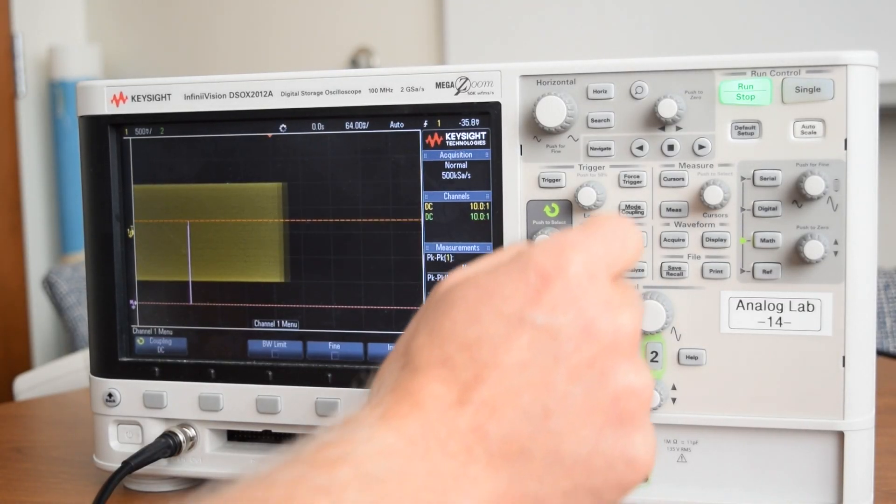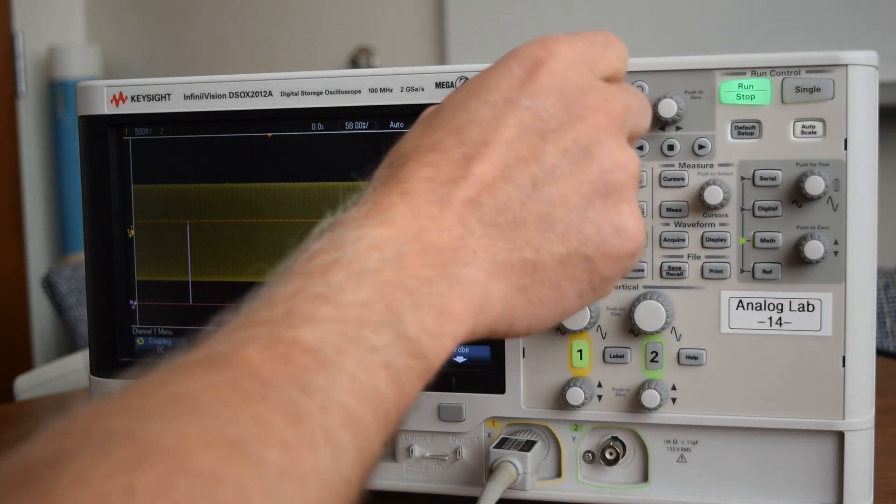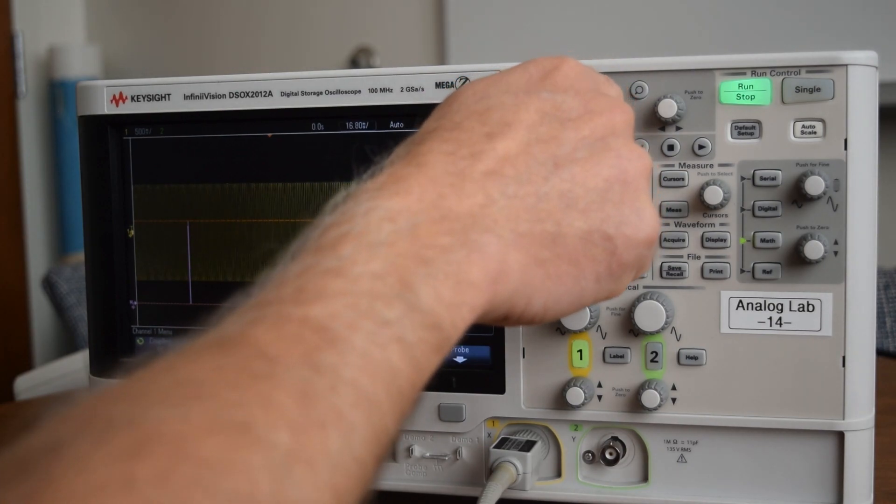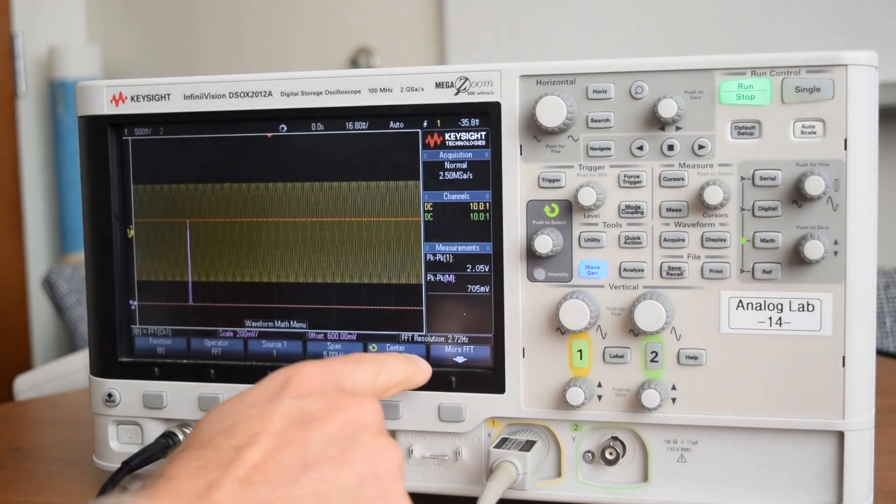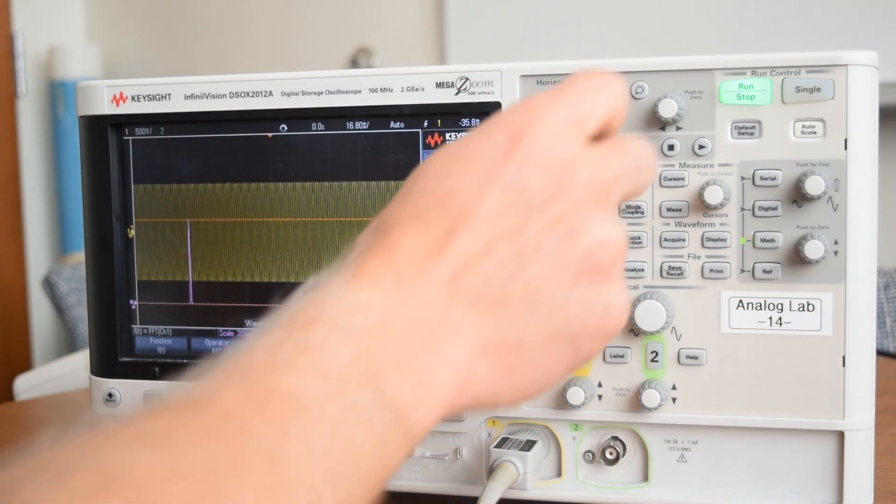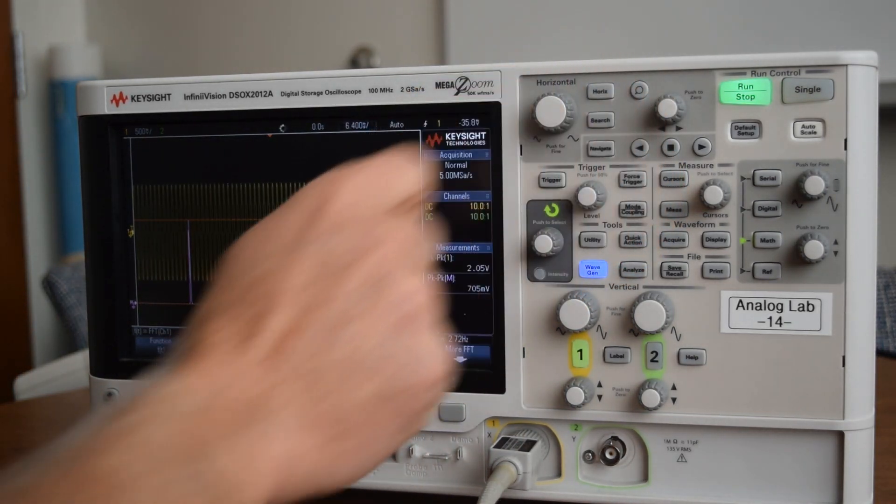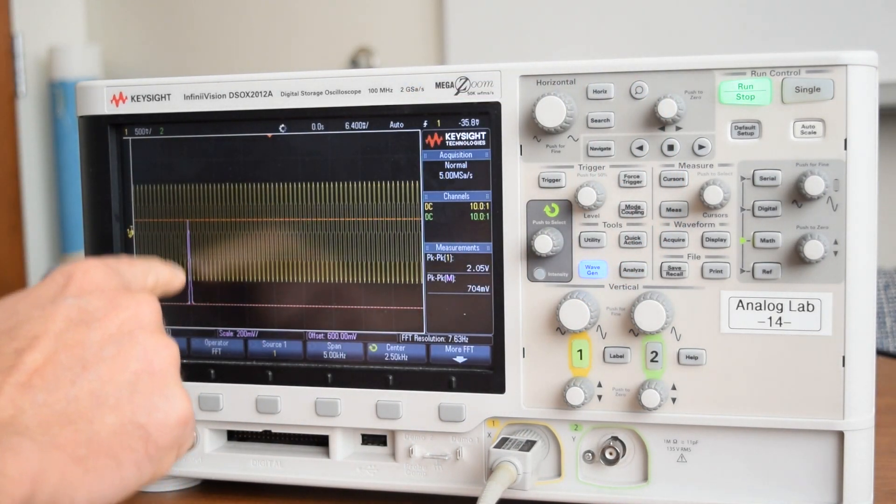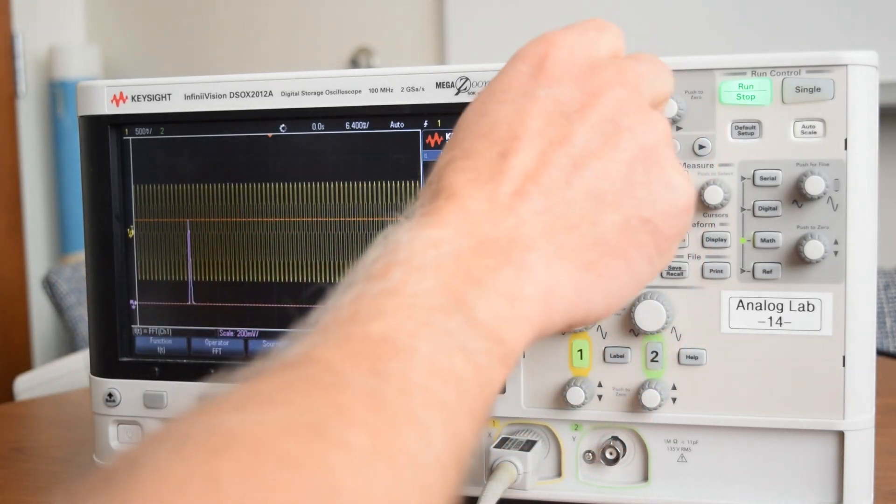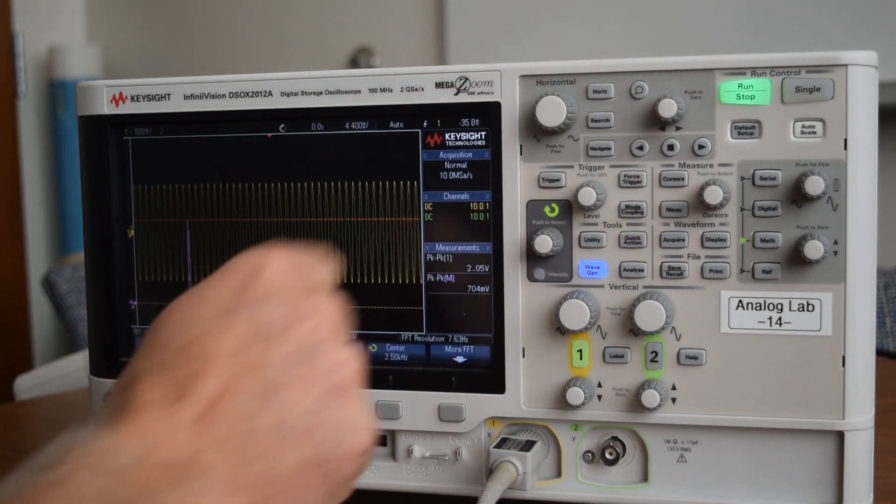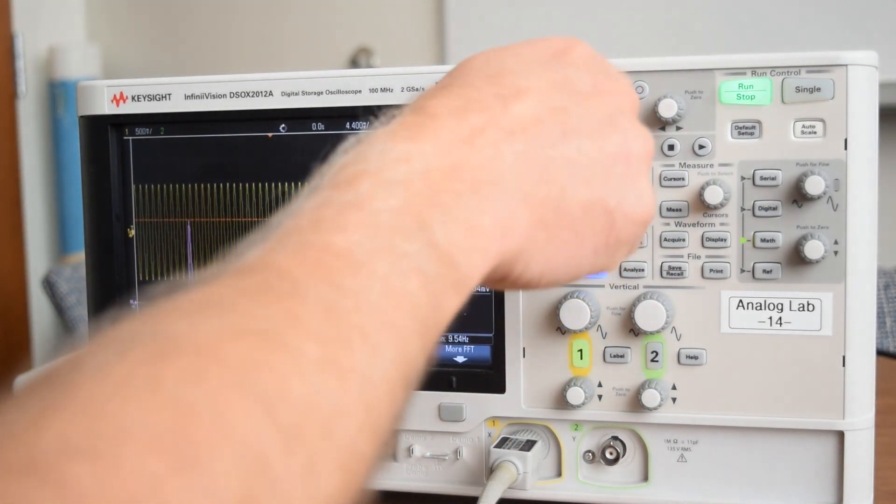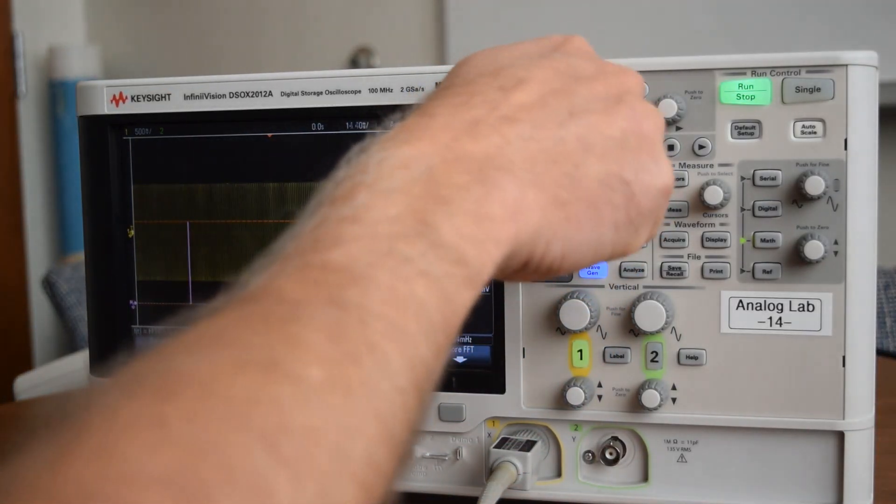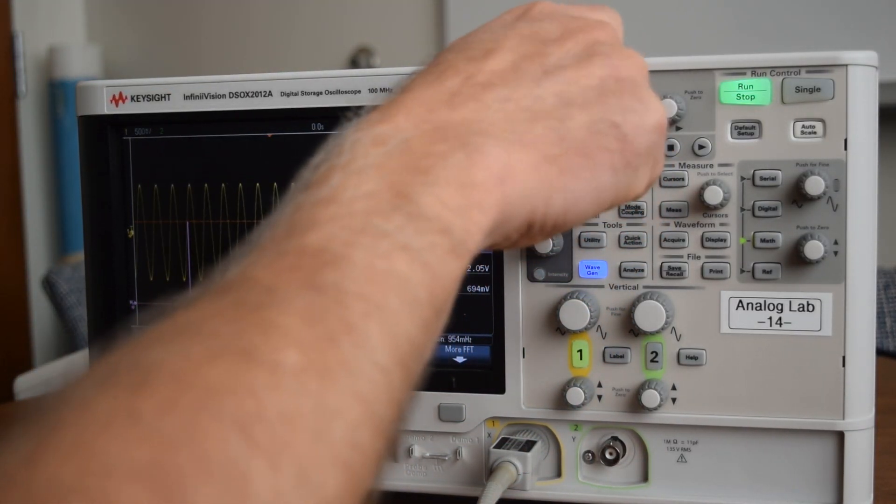And if we zoom out on my signal, you see we're changing this FFT resolution. And you see when I do that, that this band gets wider because we're getting less resolution. So in order to get a good resolution, so now what we want to do is we want to show kind of the power of this FFT.